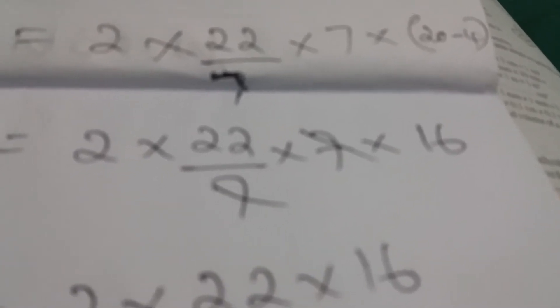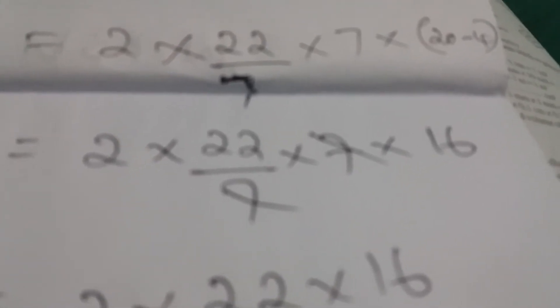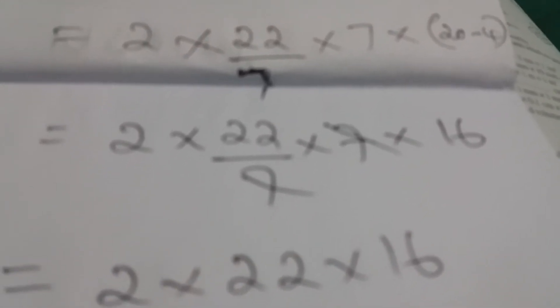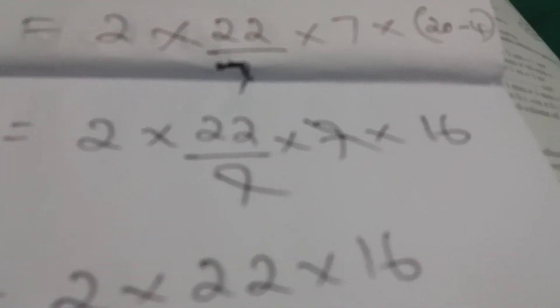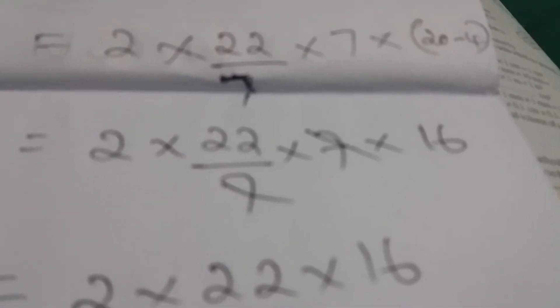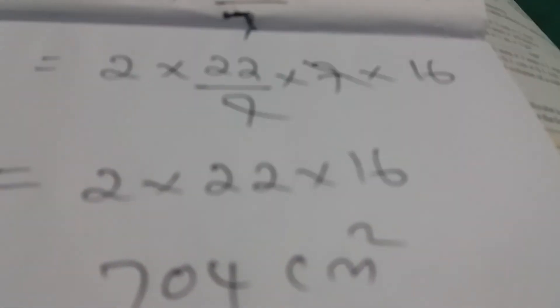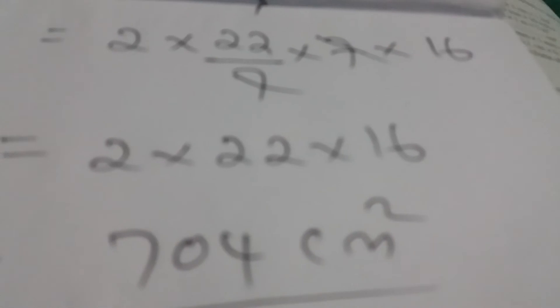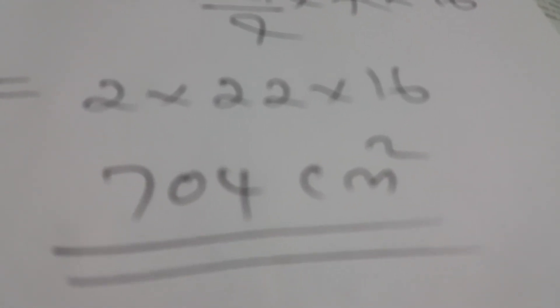So 2 times 22 divided by 7, times 7, times 20 minus 4. Then 2 times 22 divided by 7. As you can see here, just cross 7 at the bottom and 7 at the top and multiply with 16. So 2 times 22 times 16, which is 704 centimeter square.